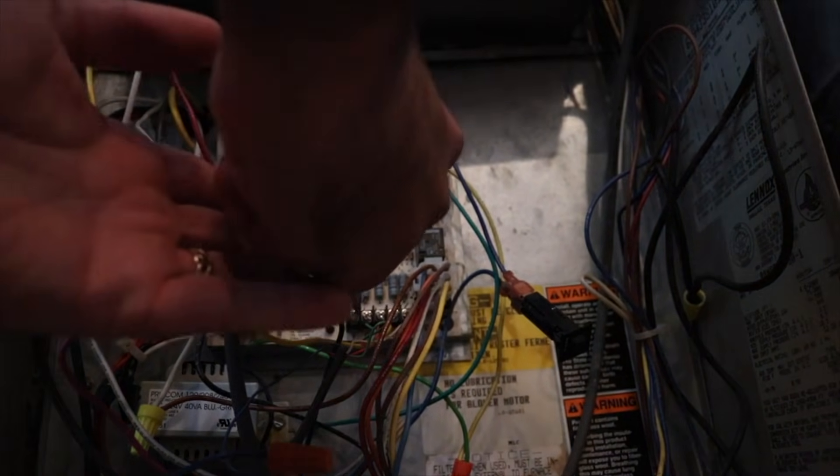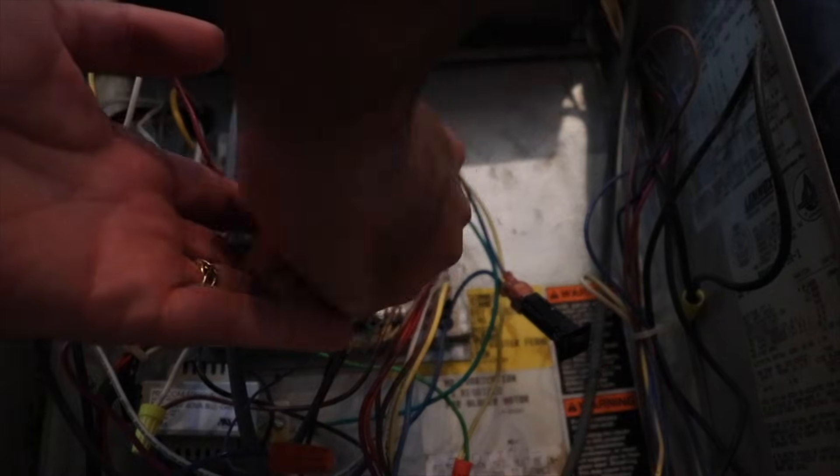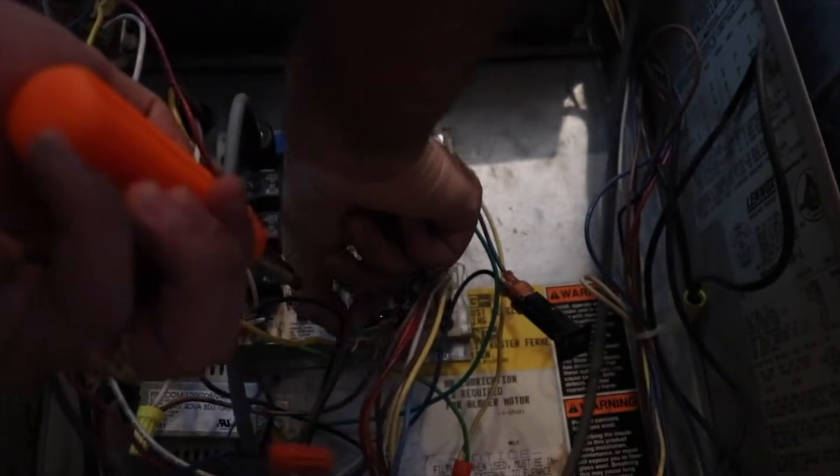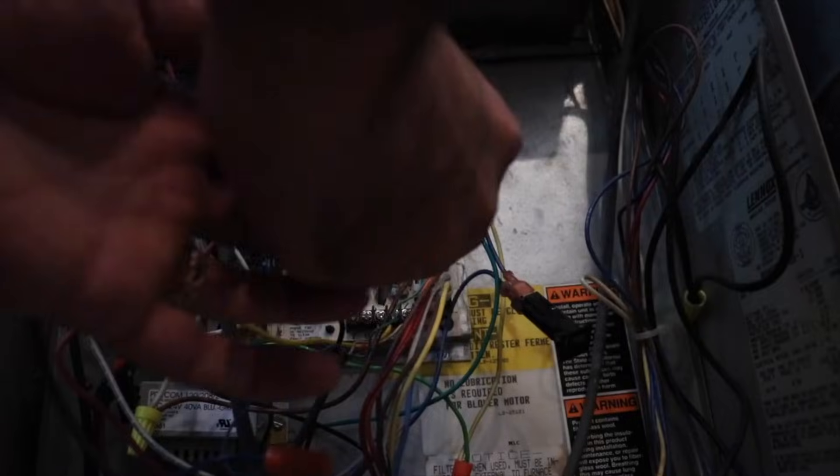And what that does is your G wire is your fan terminal. And when you take this wire that was the fan control wire and move it over to C, both at the thermostat and in your HVAC system, it has now become the C wire instead.